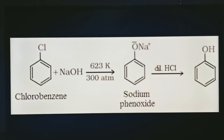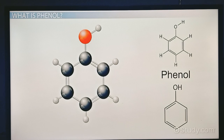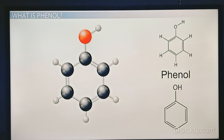So this is the structure of phenol — C6H5OH — one phenyl group and OH, where phenyl means the benzene ring. Okay, all the best. Thank you.